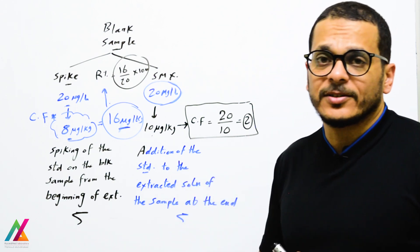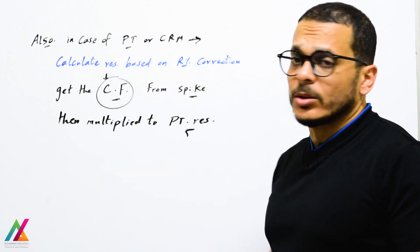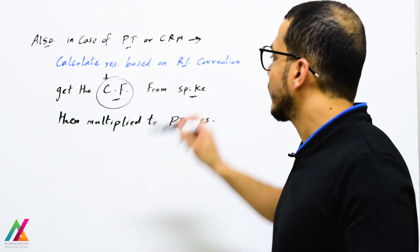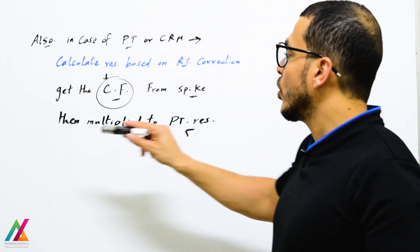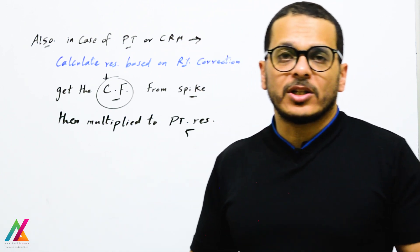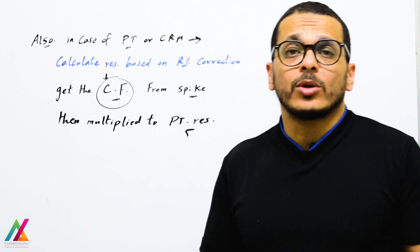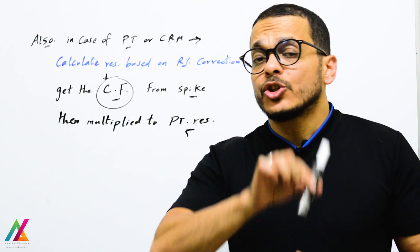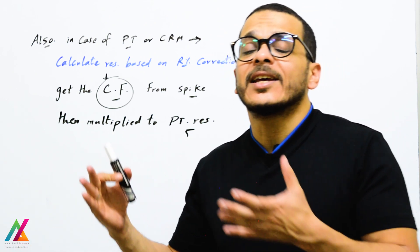For PT or CRM samples, if the report says 'calculate result based on recovery correction,' derive the correction factor from the spike sample itself, then multiply it to the PT or CRM result to get the real concentration. This differs by method, lab, and equipment, but ultimately all correction factors — dilution factors, recovery correction factors, or reference values — shall be updated and implemented in the equipment or software to obtain the real result.